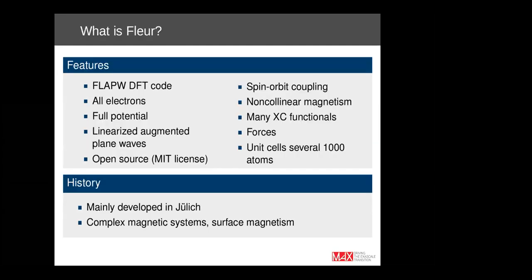Before going into the theoretical background, let me give a short overview about what FLEUR actually is. FLEUR is a FLAPW DFT code, meaning it treats all electrons — both core electrons and valence electrons — within the DFT self-consistency cycle. FLAPW stands for Full Potential Linearized Augmented Plane Waves. Full potential means no shape approximation to the potential, and linearized augmented plane waves is the basis set used. FLEUR is open source under the MIT license and has many features, including spin-orbit coupling, non-collinear magnetism, many exchange correlation functionals, forces, and calculations with up to several thousand atoms.